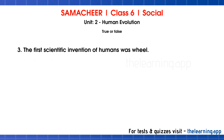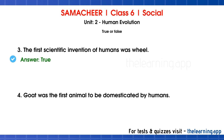Third question: The first scientific invention of humans was wheel. Fourth question: The first animal to be domesticated by humans was goat. This is false. Dogs are the first animals domesticated by humans, not goat. So this is a false statement.